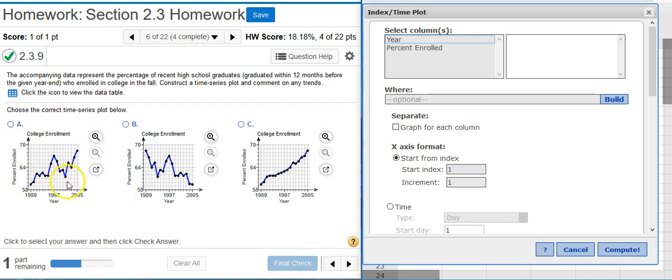So you can see here with our answer choices, the percent enrolled is on the y-axis. So I'm going to select that there.